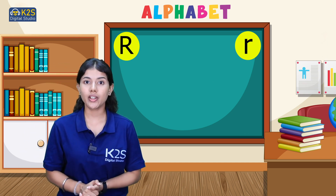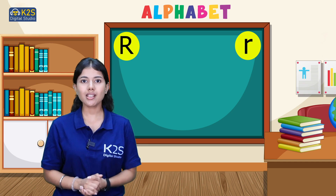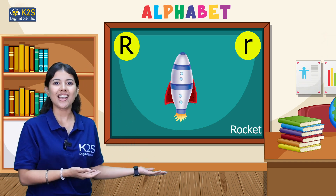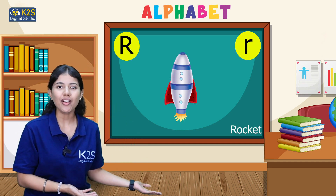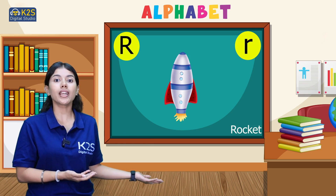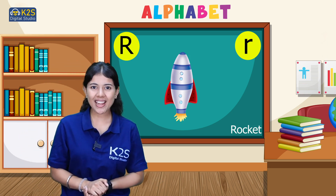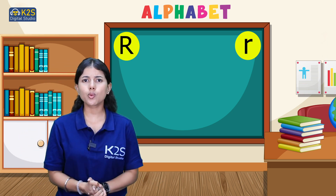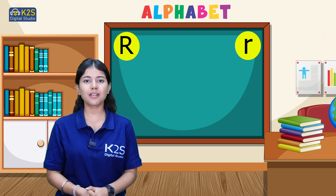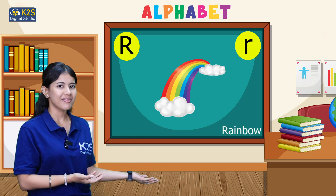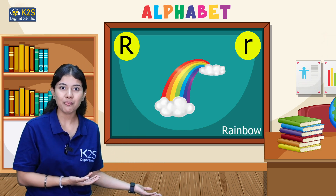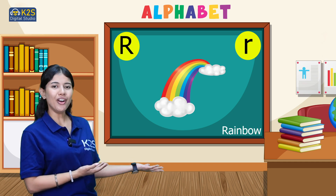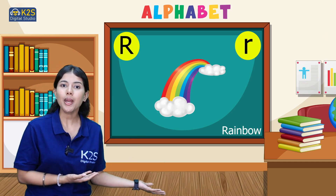The third word we are having is Rocket. R for Rocket. Great. Now the last word is Rainbow. Beautiful! R for Rainbow. Rainbow.